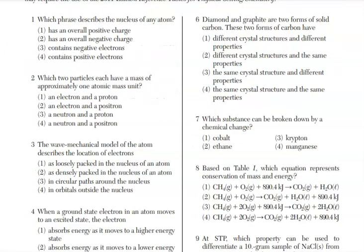For question 6, diamond and graphite are known as allotropes, even though they're made of the same atoms of carbon, and therefore if they're different structures, they have different properties, which is choice 1.